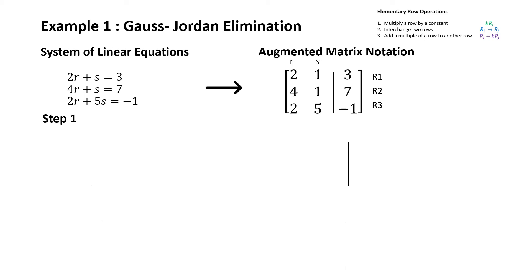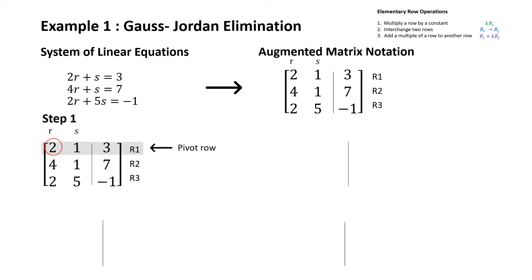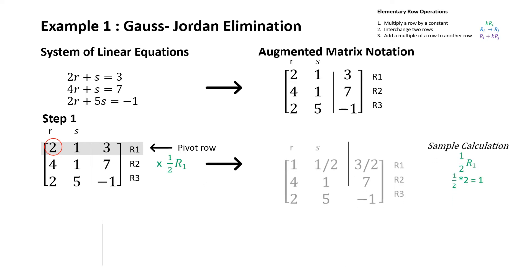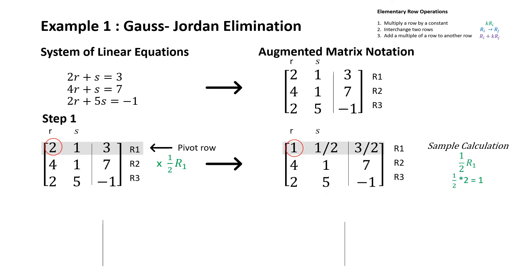We will be working column by column and using the pivoting method in order to transform this matrix into reduced row echelon form. The first step is to determine the pivot row, and we want to obtain a one in the pivot position. This will be done by multiplying the pivot row by a constant. We can see that this operation leads to the matrix on the right, where we have a one as the leading entry in the non-zero row.